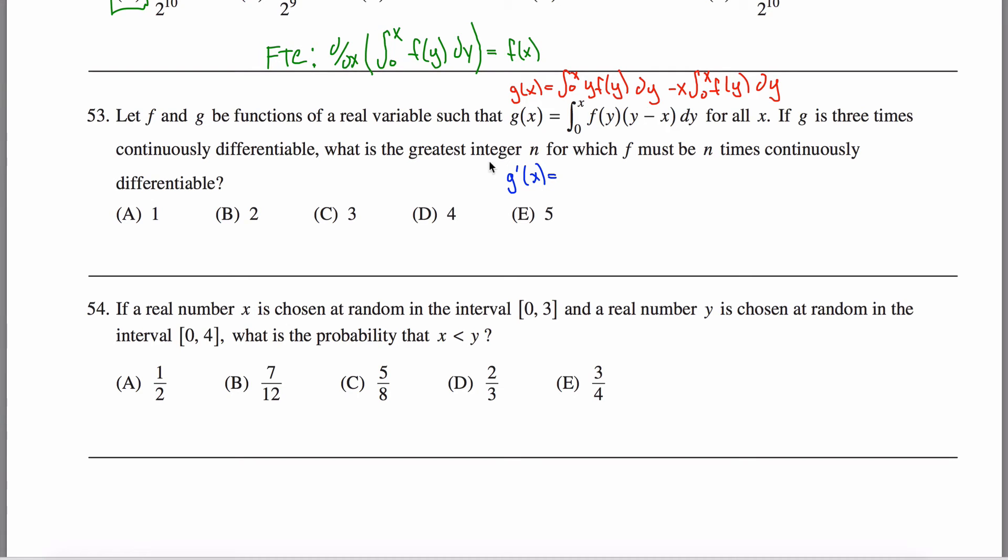Therefore, the derivative of, because I'm taking the derivative of both sides of this equation, would just be equal to what's in the integrand here, y, no x, times f of x. And I'm changing the variable here because when I take the derivative of the integral, the y is changing to the x's. I guess that's the easiest way to say that.